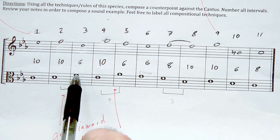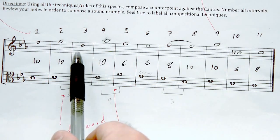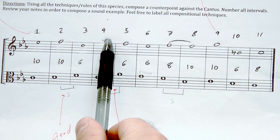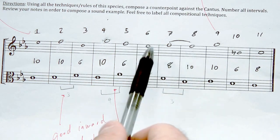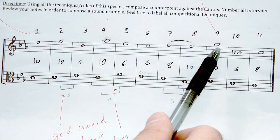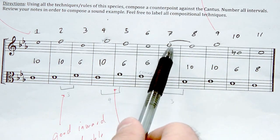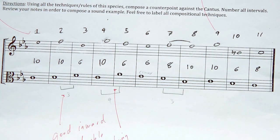Then finally, he proceeds in contrary motion, leaps up to scale degree 5, which has a lot of tension, but knows he has to wind down and head back up to 5 to create a true climax. And he approaches it by step. Let's take another listen.